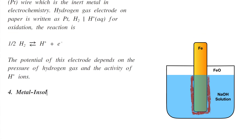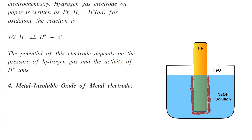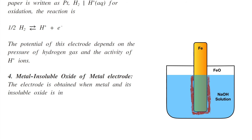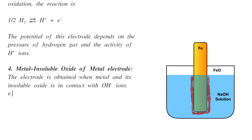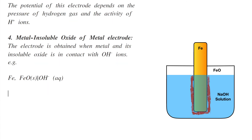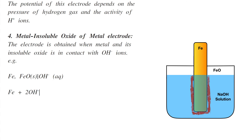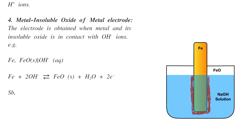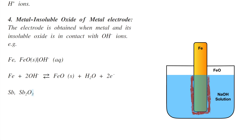Fourth is the metal-insoluble oxide of metal electrode. This electrode is obtained when a metal and its insoluble oxide are in contact with OH⁻ ions. For example, iron and iron oxide (insoluble) in contact with OH⁻ solution. The oxidation reaction is: Fe + 2OH⁻ → FeO(s) + H₂O + 2e⁻. Similarly, antimony and antimony oxide in contact with OH⁻ ions form this type of electrode.